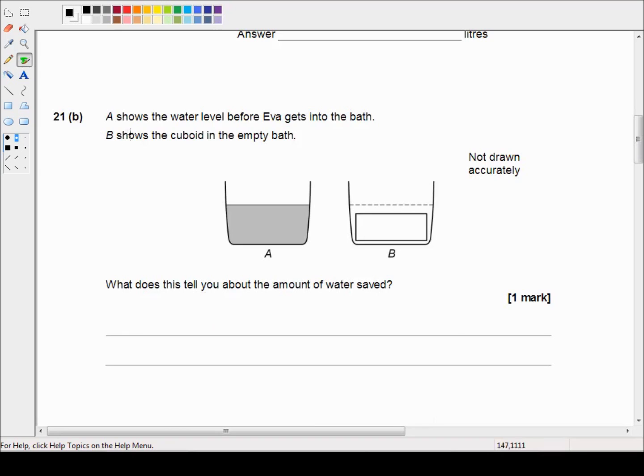Question 21B says, 'A shows the water level before Eva gets into the bath. B shows the cuboid in the empty bath. What does this tell you about the amount of water saved?' Okay, so she thought she used this much water, but she's actually used this much water.